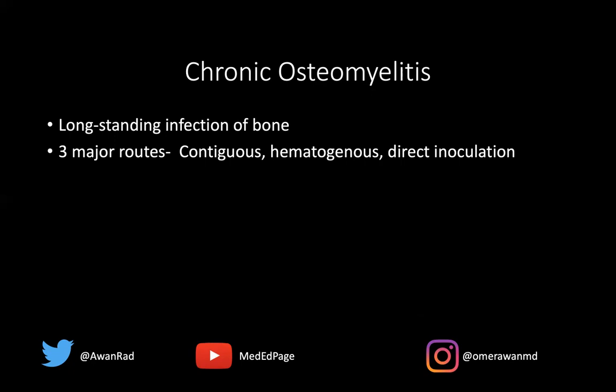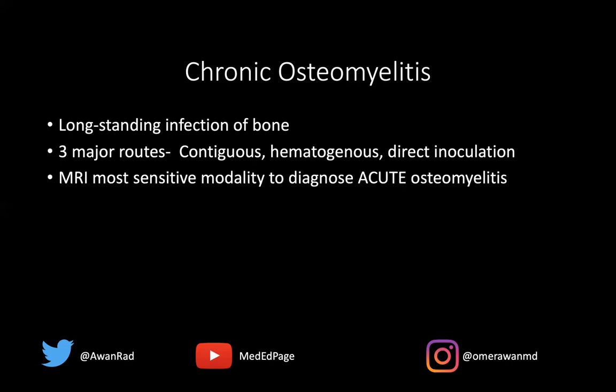Hematogenous spread is actually the exact opposite — it's in to out. It starts as osteomyelitis, then goes to the cortex as osteitis, then the periosteum as periosteitis, and then into the soft tissues where myositis may develop, an abscess, then cellulitis — in to out. Direct inoculation occurs from direct spread, either from surgery or trauma, where the bone gets directly infected. So those are the three major routes of chronic osteomyelitis.